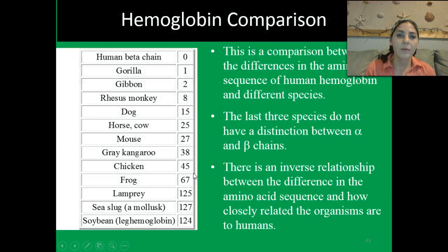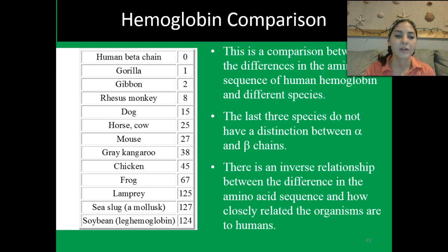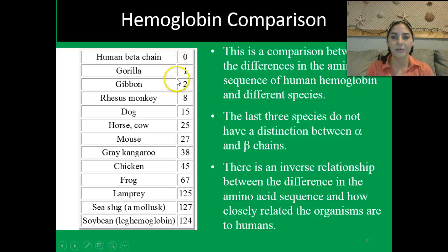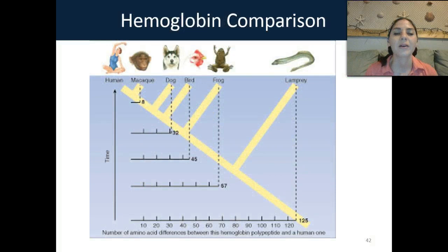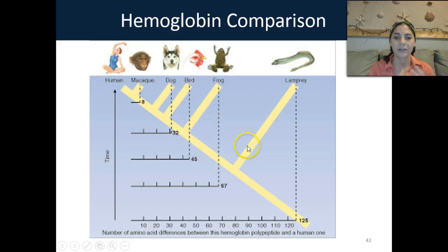Looking at the hemoglobin comparison, it's a comparison between differences in the amino acid sequence of human hemoglobin with different species. The last three species don't have a distinction between their alpha and beta chains. There is only one difference in the amino acid sequence between us and a gorilla. Between us and a gibbon, it's 2. Between us and a dog, 15. Between us and a frog, 67. And another representation: 8 differences with a macaw, 32 with a dog, 45 with a chicken, 67 with a frog, and 125 with a lamprey — the further we go, the more differences there are.